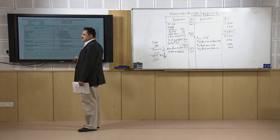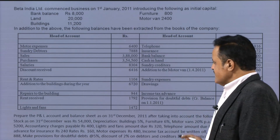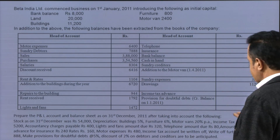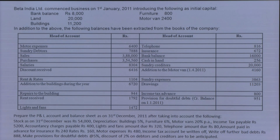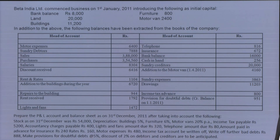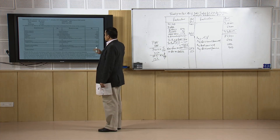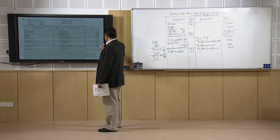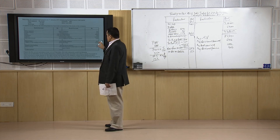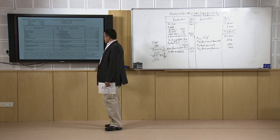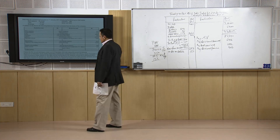Addition to buildings — nowhere to be taken, only depreciation has to be taken and we have taken it. Repairs to building taken. Rent received taken. Lights and fans taken including adjustment. Telephone taken. Insurance taken including advance paid. Bank balance — asset. Cash in hand — asset. Sundry creditors — liability, will go to balance sheet. Addition to motor van — only depreciation taken. Sundry expenses — 3,863 already taken. Drawings — will go to balance sheet. Income tax and provision for doubtful debts previous year balance already adjusted.